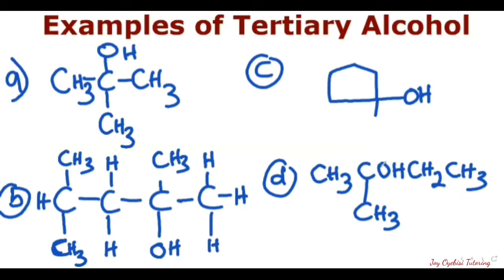Now, examples of tertiary alcohols. As I said, the carbon bearing the OH for tertiary alcohols will be attached to three different carbons. For this first example, the carbon bearing the OH group is attached to one of these, two, and then three. So that is why it's a tertiary alcohol.